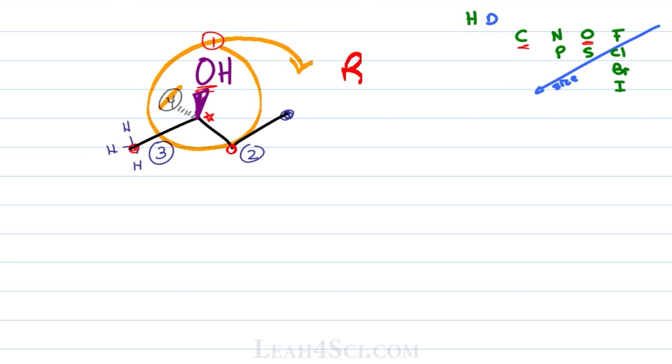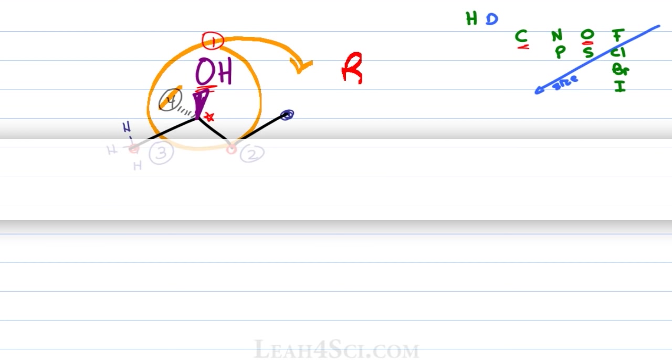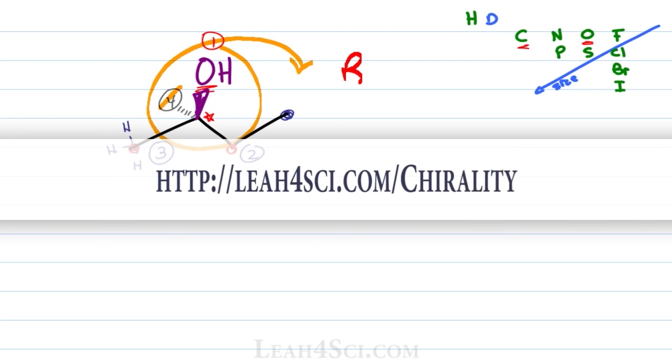Now what happens if priority number four is in the front of the molecule rather than the back? How do you find R and S? That is exactly what we'll cover in the next video and you can find that along with the stereochemistry practice and cheat sheet by visiting my website leah4sci.com slash chirality.